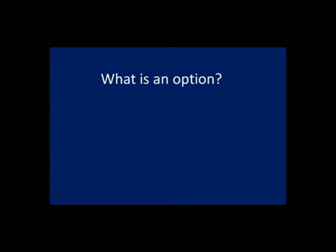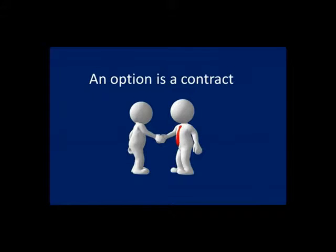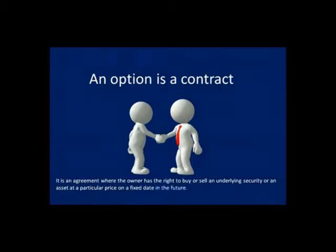What is an option? Is an option a share? No. What is an option then? An option is a contract. It is an agreement where the owner has the right to buy or sell an underlying security or an asset at a particular price on a fixed date in the future.